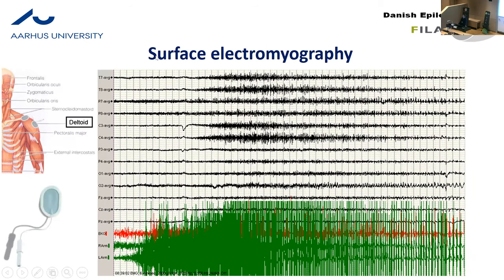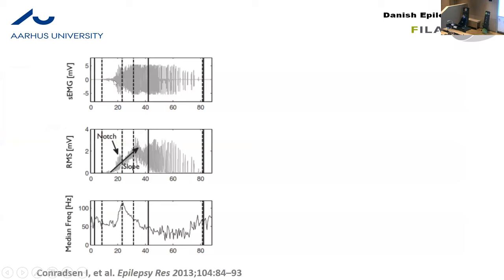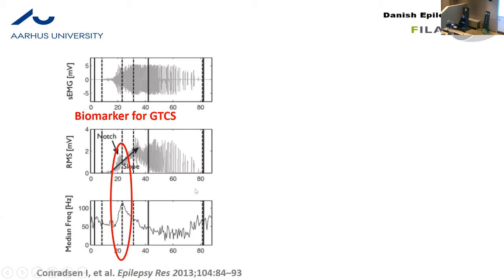We used surface electromyography — muscle signals during convulsive seizures with jerks. We place electrodes on the muscle, and you can see this beautiful signal from a generalized tonic-clonic seizure in green. The EMG signal shows the root mean square to normalize the amplitude, and then the median frequency. When there is a notch and increase in the amplitude, you have a huge increase in frequency. We call this an electrophysiological biomarker of the seizure, and we constructed an algorithm specifically targeting it.